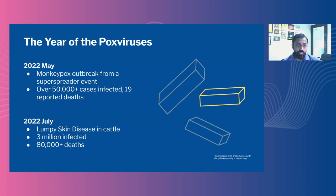Fast forward into 2022, there was an outbreak of monkeypox, largely out of a super-spreader event in Europe, with multiple cases in quick succession reported from across Europe with a significant number causing deaths. There was also a second outbreak in the month of July — lumpy skin disease of cattle. Both of them share the commonality of being poxviruses. This outbreak resulted in a few million cattle being infected and a significant number dying. So 2022 most likely would be called the year of the poxvirus.